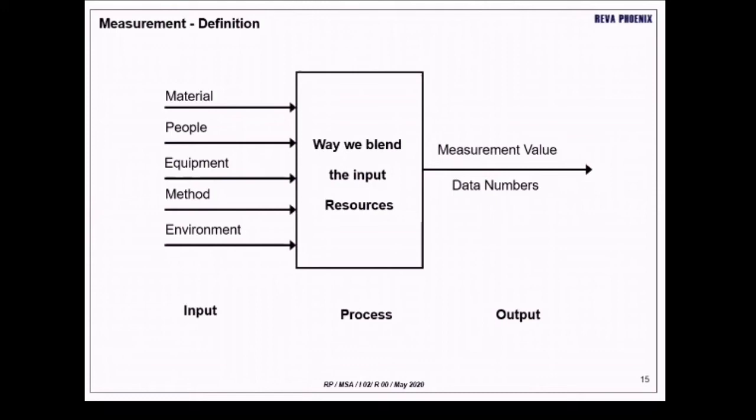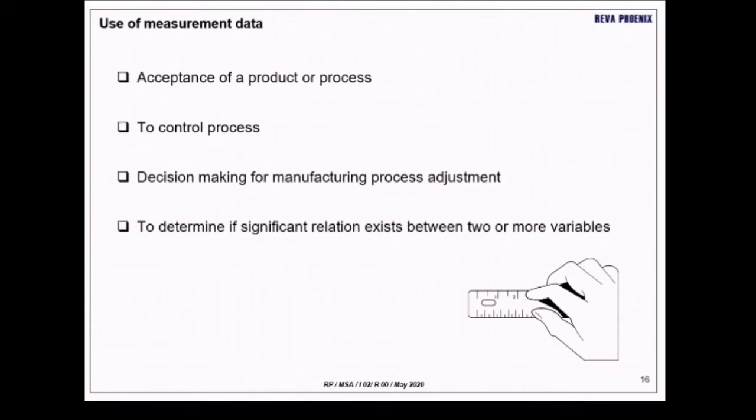This is a process diagram. Input and output. What are the inputs for measurement system? The material, people, equipment and method and environment. And what process happens with the value addition? The way we blend all the inputs and resources. What we expect is the measured value or the measurement value. In our simple terms, we call it as the data and the numbers that we expect.